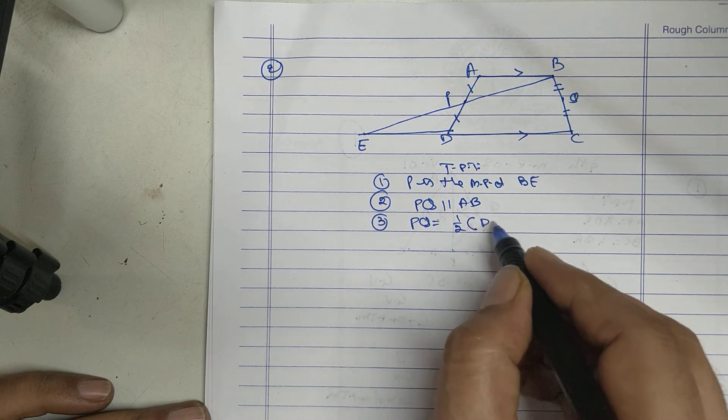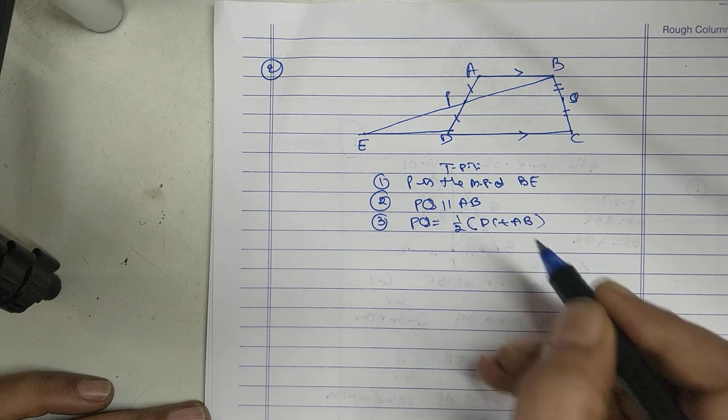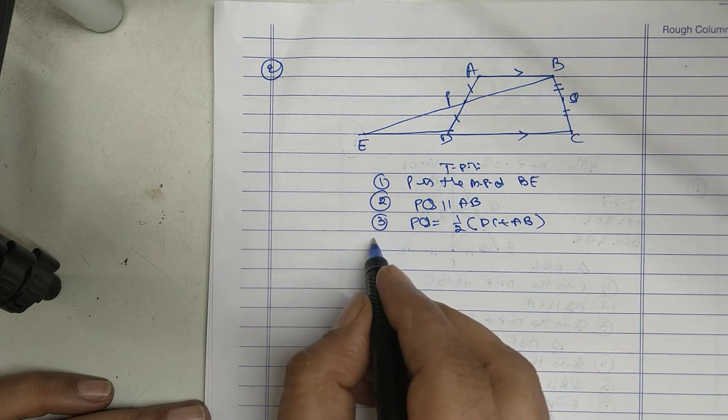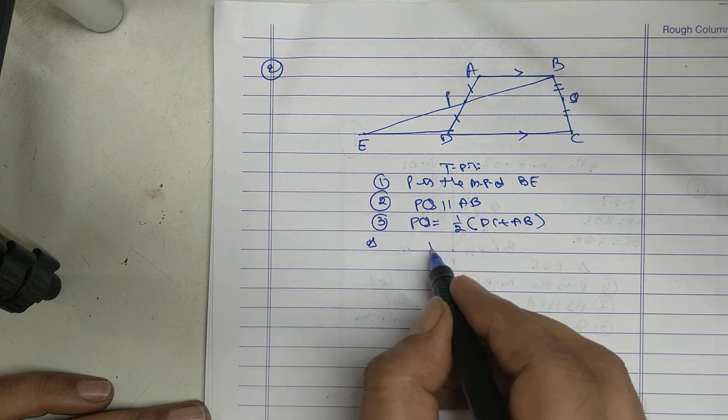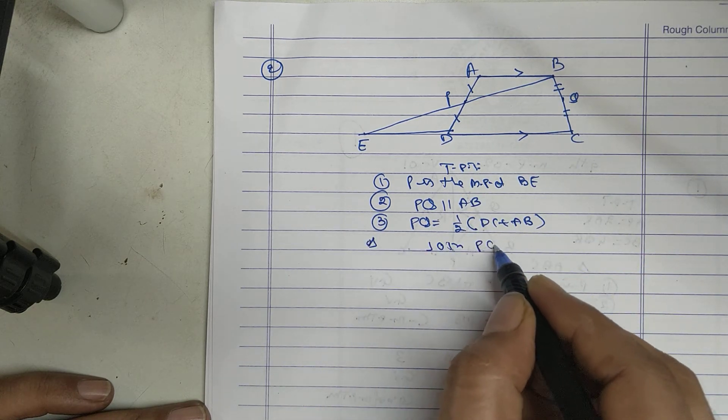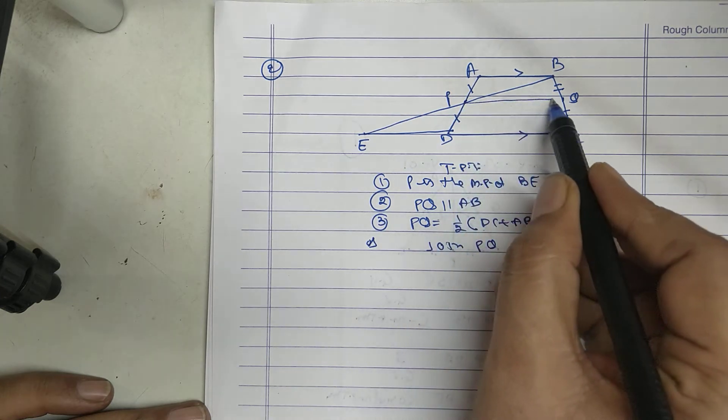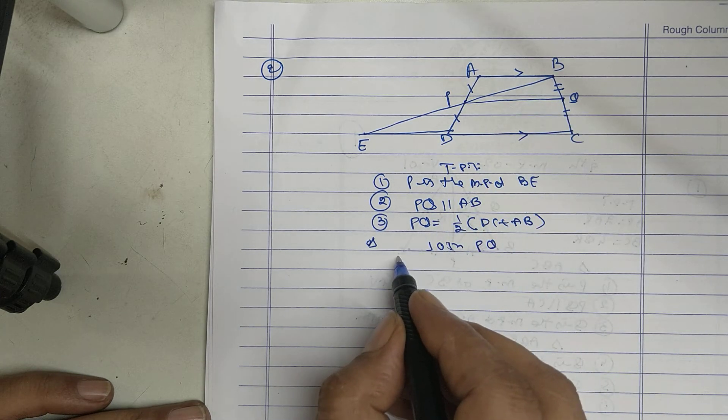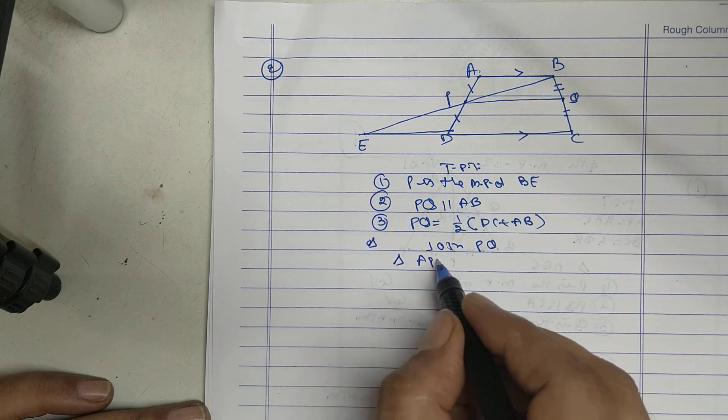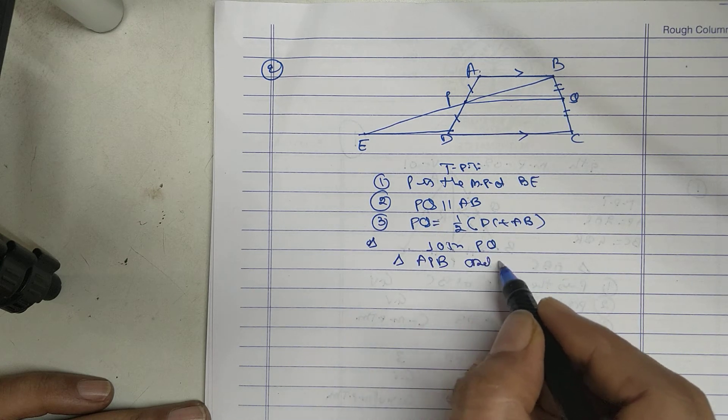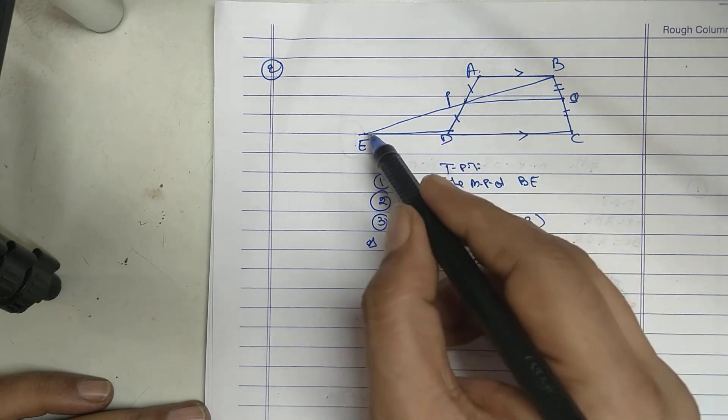Take first join PQ. Take triangle ABP and DPE.